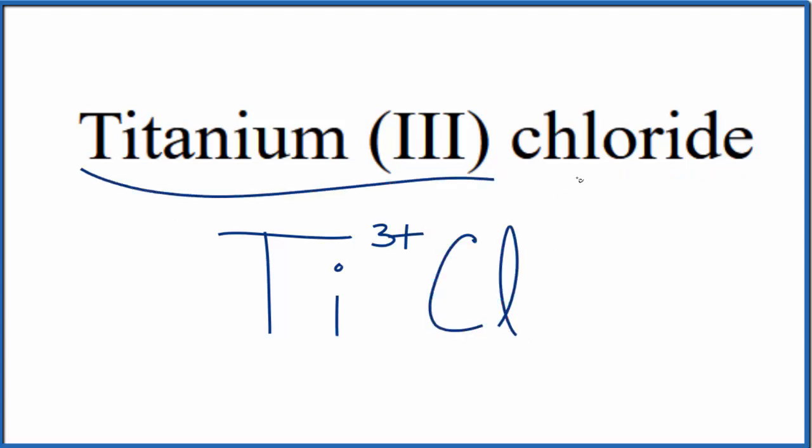Because titanium is a transition metal and then chloride is a nonmetal, we're going to think about the charge when we write the formula for titanium 3 chloride. Chlorine on the periodic table, that's in group 17, sometimes called 7A, that's 1 minus.